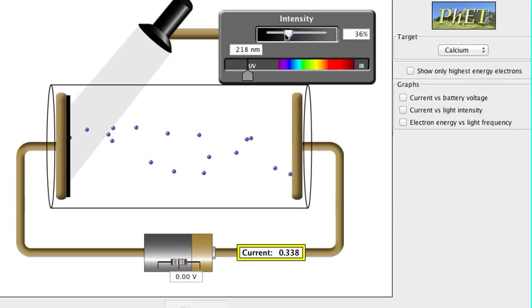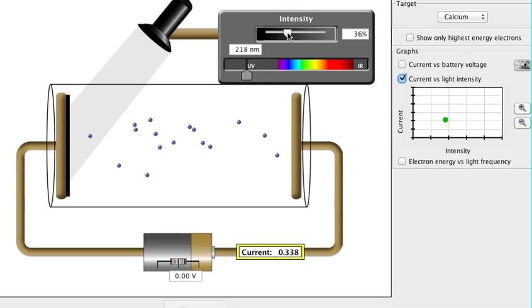The first important thing you need to know is that the brighter the light, the greater the current. That is, the greater the number of electrons that are ejected from the metal. So a brighter light creates a larger current, which means more electrons ejected. You'll notice it's a linear relationship that goes through zero. So no matter how low the intensity is, as long as you're not at zero, you'll still have some electrons being ejected from the metal.